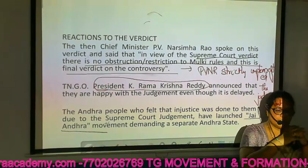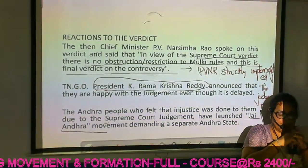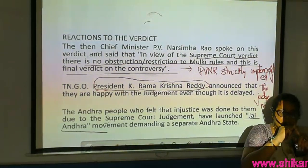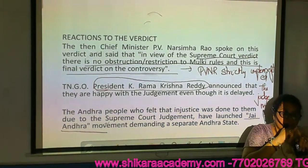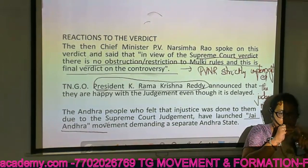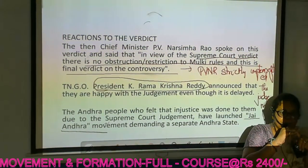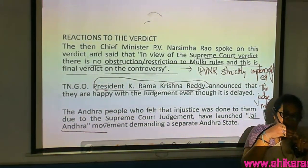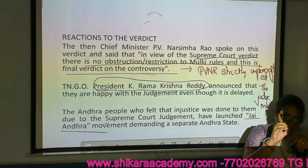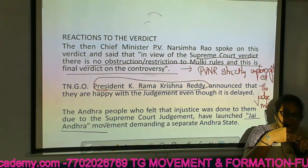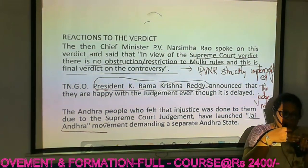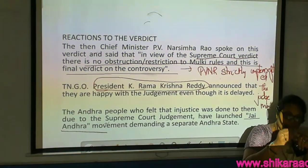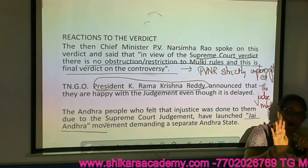To recap: the articles related to Mulki rules used by the court are Article 16 Clause 3, Articles 35A and 35B, and Article 372. Article 16(3) raised the question of whether it is applied to the entire state or only part. Articles 35A and 35B say property and public employment rules before commencement of the Constitution will continue. Article 372 says any law enforced before the Constitution will continue until Parliament repeals or replaces it. Section 119 of the States Reorganization Act also tells the same — whatever previous rules were there will continue even after merger of states.